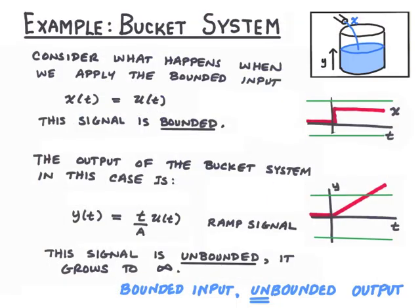Let's look at an example — the bucket system. Consider what happens to the bucket system when we put in a bounded input, specifically a unit step signal. This signal is bounded because it's contained below some upper and lower limits at all times. The output of the bucket system with this input, which corresponds to a constant flow rate, is y(t) = (t/a)u(t). This is a ramp signal, and it's unbounded — we can't find any upper and lower bounds to contain this signal for all time.